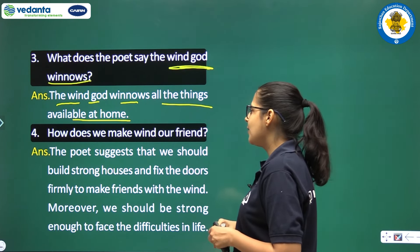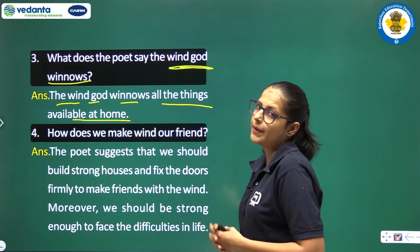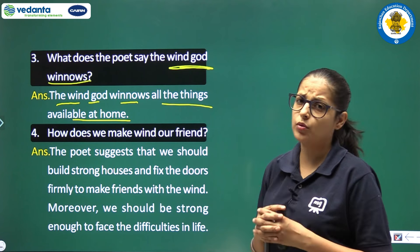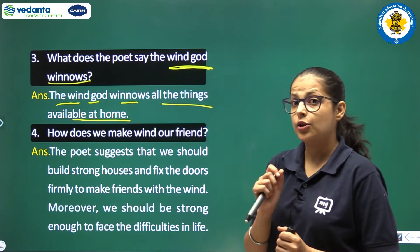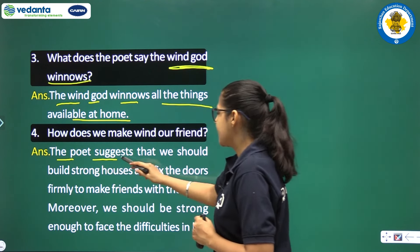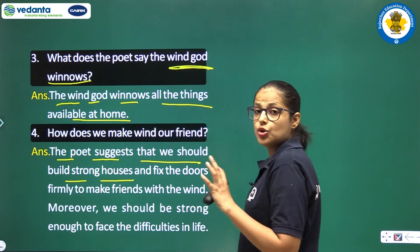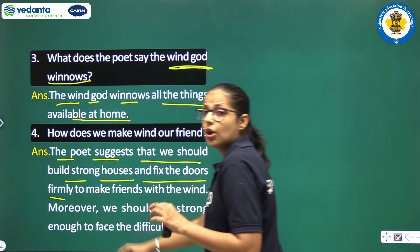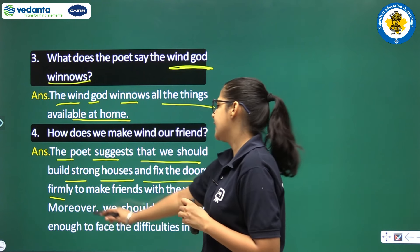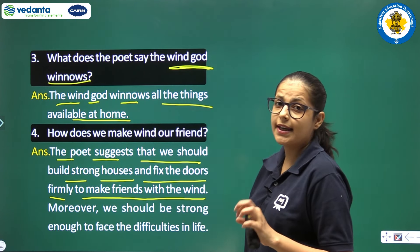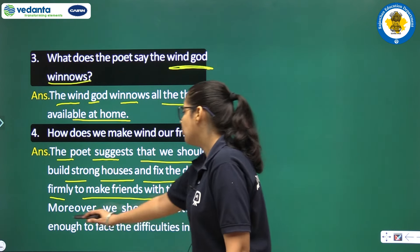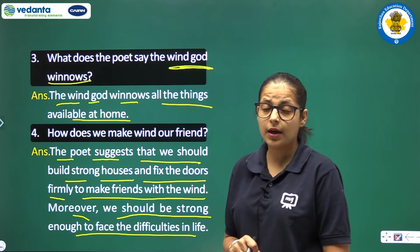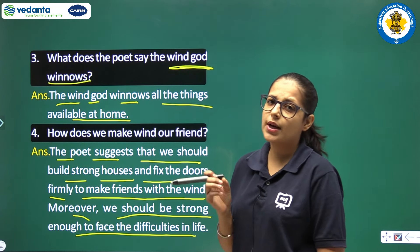The fourth question is: How can we make wind our friend? The poet suggests that we should build strong houses and fix the doors firmly to make friends with the wind. Moreover, we should be strong enough to face the difficulties in life and make ourselves capable of facing all problems.